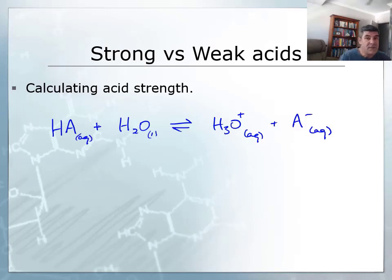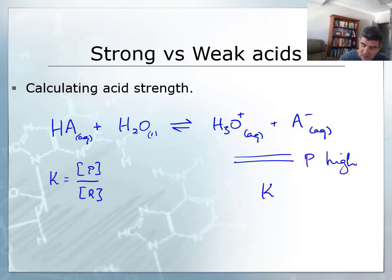If this is regarded as an equilibrium, then we know that our general equation for equilibrium is the concentration of the products over the concentration of the reactants. If the product section is high, then we're going to have a high K value, and that's going to mean we're going to have a strong acid solution.